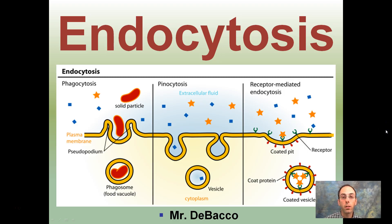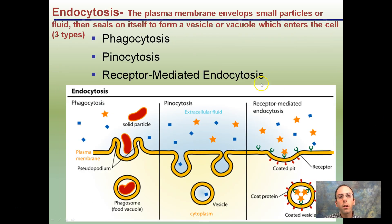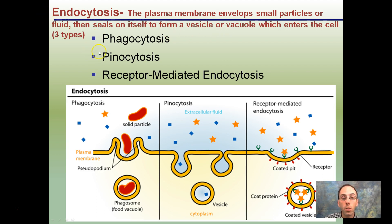Looking at endocytosis, we're going to be looking at taking things into the cell and how it goes about doing that, and how the process may differ depending on what particles the cell might be taking in. Under endocytosis, it's basically the plasma membrane enveloping small particles or fluid, then sealing itself in the form of a vesicle or vacuole which enters the cell. There are three different types: phagocytosis, pinocytosis, and receptor-mediated endocytosis.